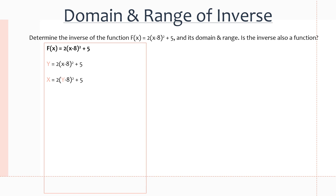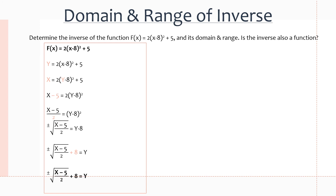With some simple algebra, x − 5 = 2(y − 8)². We divide both sides by 2 to get (x − 5)/2 = (y − 8)². Then we square root both sides to give us ±√((x − 5)/2) = y − 8. Adding 8 to both sides, we finally get y = ±√((x − 5)/2) + 8.